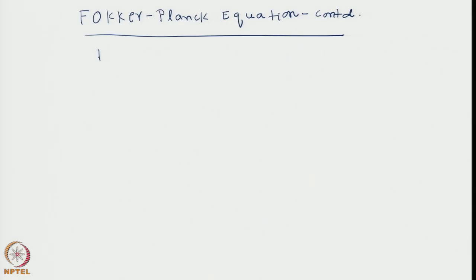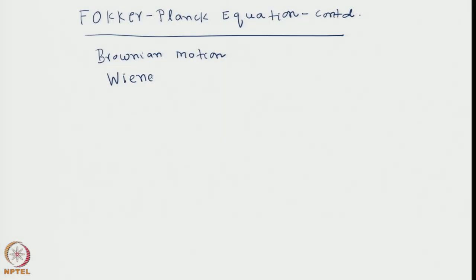Hello students. We continue with the Fokker-Planck description of a stochastic process. This is the equation that describes Brownian motion, and it is also known in the language of stochastic processes as the Wiener process. This is a special name for unbiased Brownian motion, because it has certain characteristics.